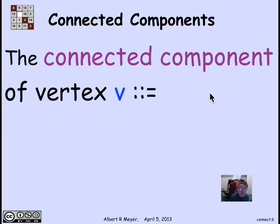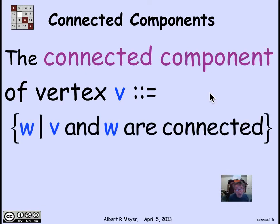The formal definition of the connected component of a vertex V is simply all of the vertices W that are connected to V.